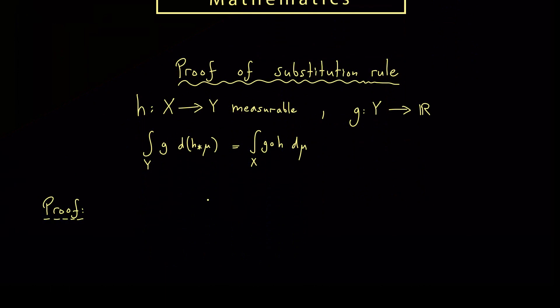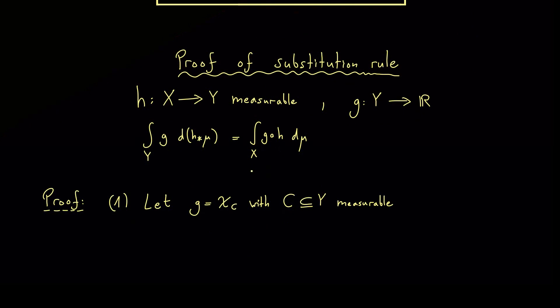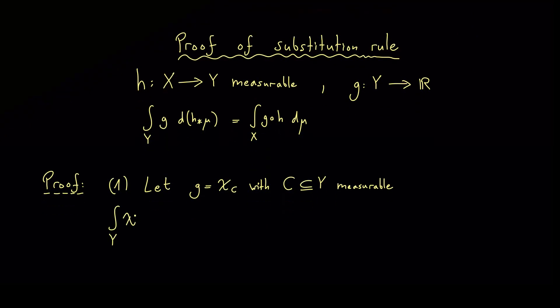Let's start with a simple case for such a function G, namely a characteristic function. Of course our function G should be measurable and therefore we take an element C from the sigma algebra. And now for this easy case we can calculate both sides of our formula here. On the left hand side we have the integration of chi C over Y. However, the integration of a characteristic function is always the measure of the corresponding set. And of course here we have the image measure H star mu.